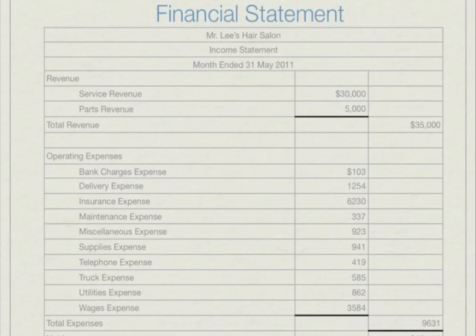This is an income statement for the month of May. Net income totals $25,369, with total revenue of $35,000 and total expenses of $9,631. By looking at this financial statement, we can easily tell that the business is in a very healthy financial state. The high income and fairly low expenses mean that even if the business has fewer customers for a period, it should still make income rather than a loss.